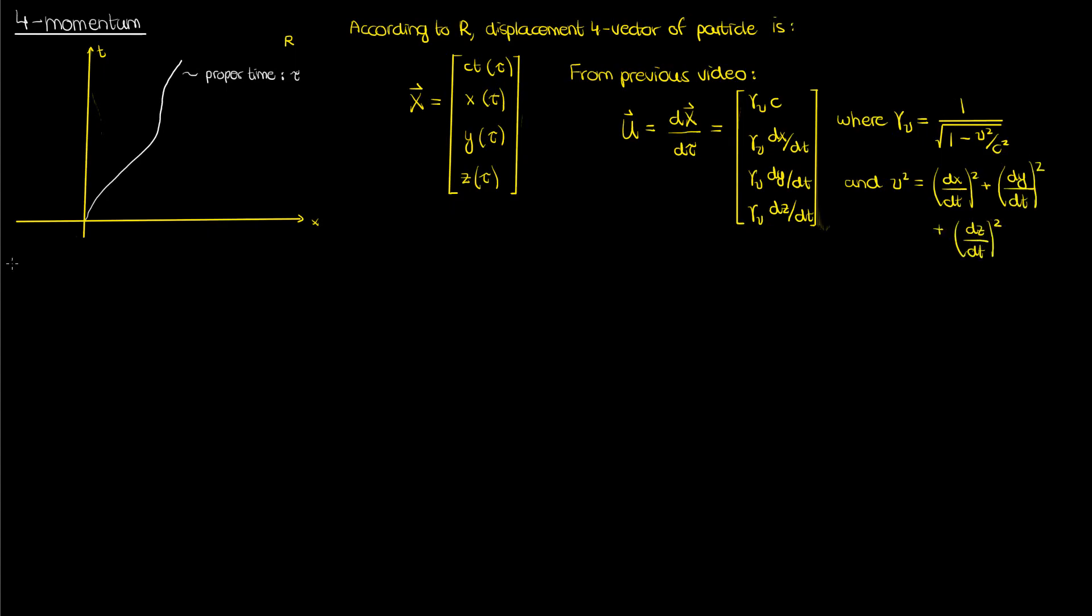Let's now take things a step further and develop the four-momentum, the four-vector version of momentum in special relativity. From classical physics, we know that the momentum of a particle is its mass times its velocity, so a good candidate for the four-momentum, which I'll denote using a capital P, is the particle's mass and its four-velocity u. More specifically, this m is the particle's rest mass.